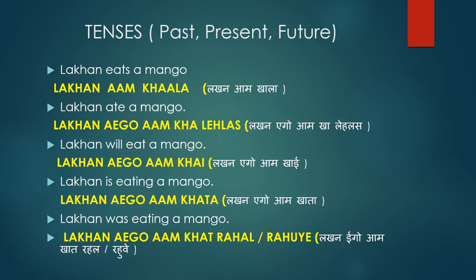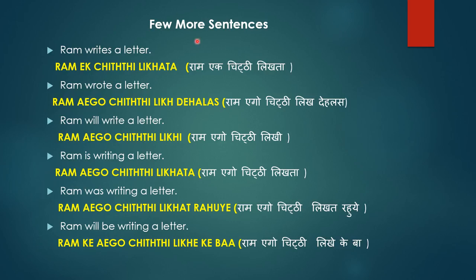Let's see a few more sentences using the verb 'write' — 'likhna.' 'Ram writes a letter' becomes 'Ram ek chitthi likhta' in Bhojpuri — compare to Hindi 'Ram ek chitthi likhta hai.' For past tense, 'Ram wrote a letter' becomes 'Ram ek chitthi likh de las' — meaning 'already written,' like Hindi 'Ram ne ek chitthi likh liya hai.'